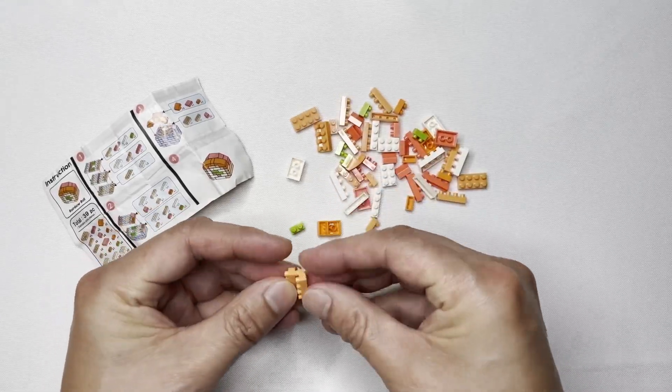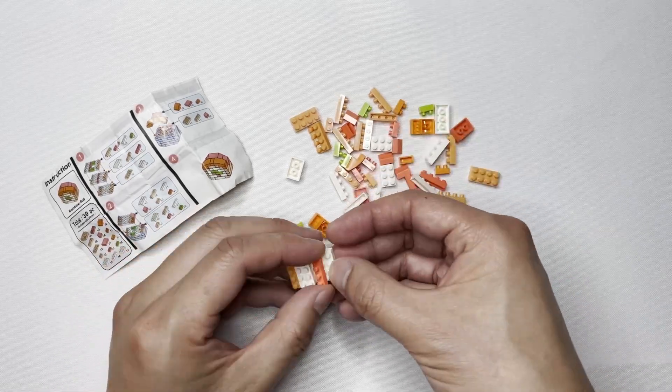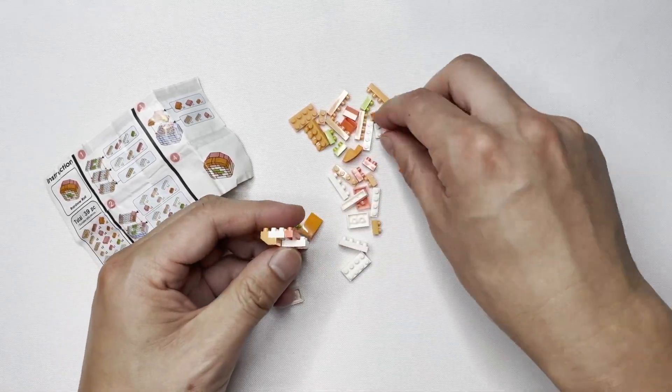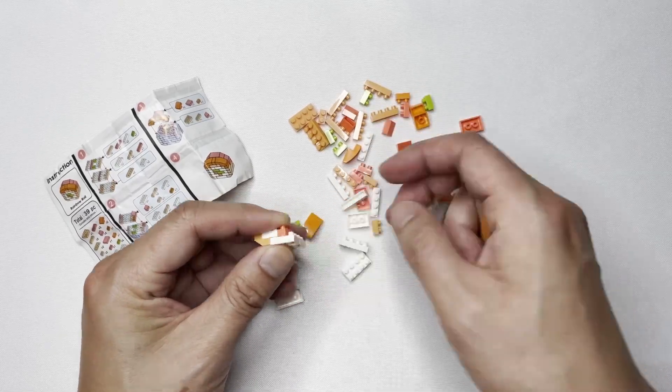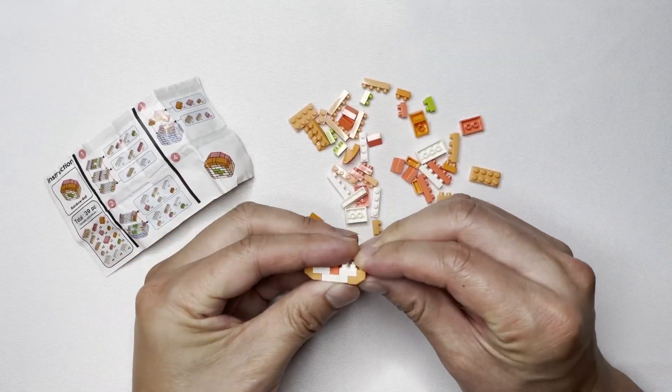So what the heck is Kaiten sushi? Well, it is conveyor belt sushi. The chefs place the sushi on a covered plate and that plate is put on the conveyor belt and then you as the diner can take that sushi off the conveyor belt and eat it.